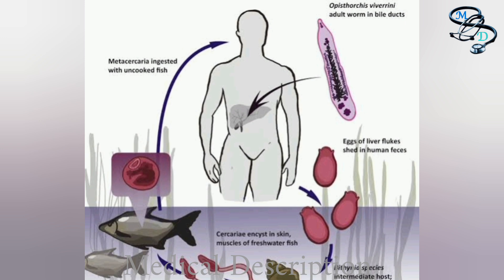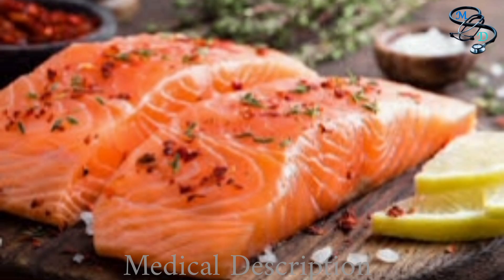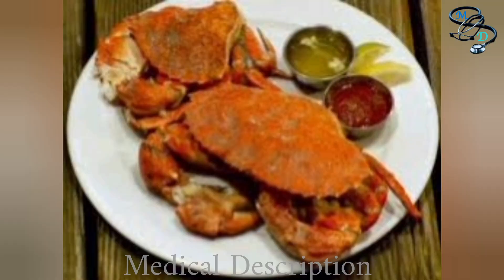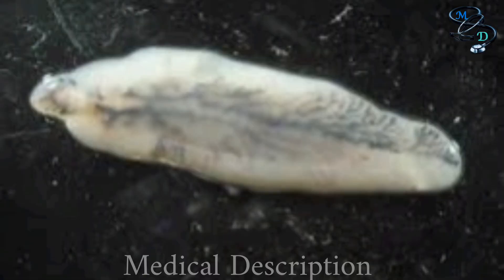Opisthorchis species are liver fluke parasites that humans can get by eating raw or undercooked fish, crabs, or crayfish from areas in Asia and Europe where the parasite is found, including Thailand, Laos, Cambodia, Vietnam, Germany, Italy, Belarus, Russia, Kazakhstan, and Ukraine. The liver fluke infects the liver, gallbladder, and the bile ducts of humans.